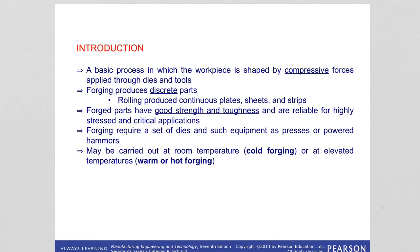Unlike rolling operations where we produce continuous plates, sheets, and strips with various cross sections, in forging operations we produce discrete parts, and forged parts have good strength and toughness. This is due to the grain structure achieved with forging. Forging operations can be performed with a heavy hammer, and most forging operations use dies and equipment such as presses or powered hammers.